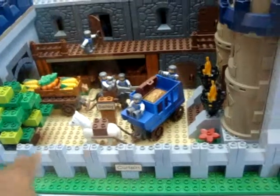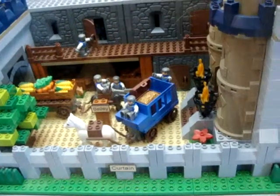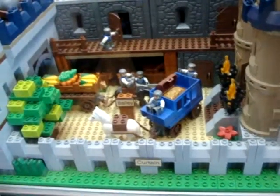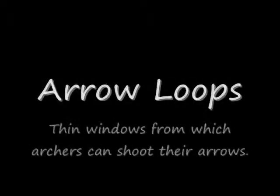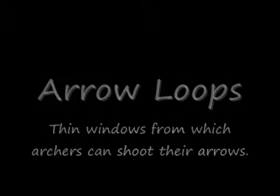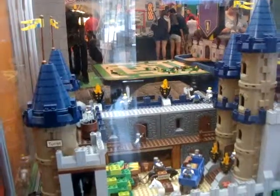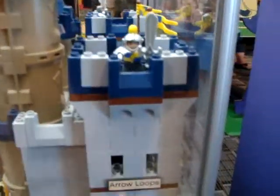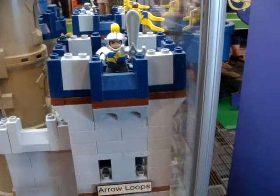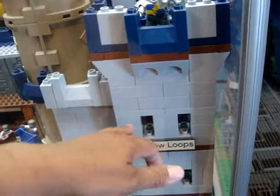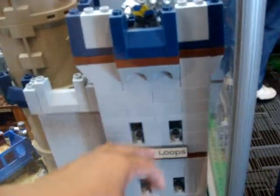This is the curtain wall around the castle to protect it from attack. Arrow loops — thin windows for archers to shoot through. Arrow loops. The arrow loops — this is where the notch is.